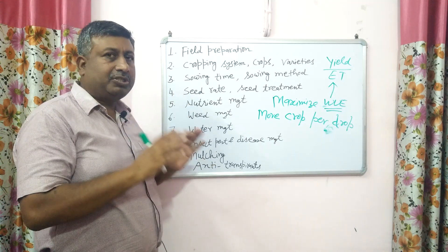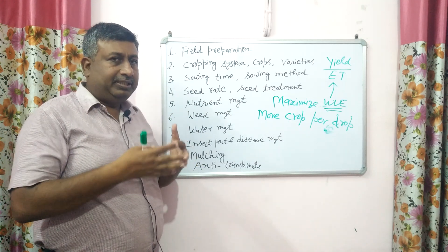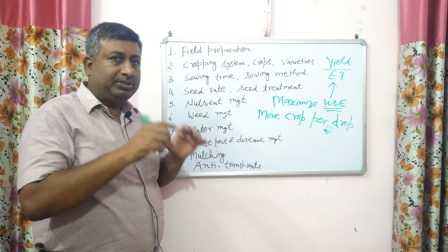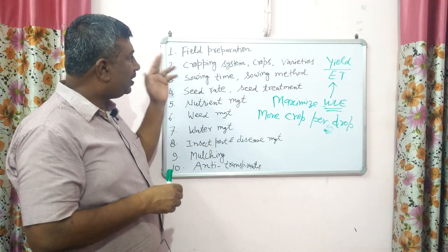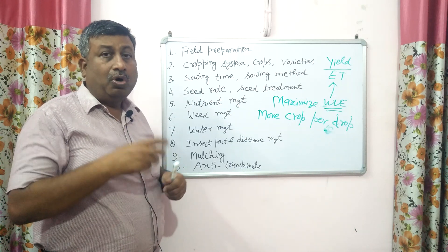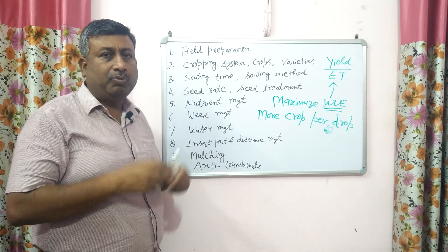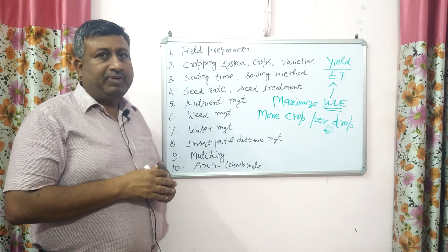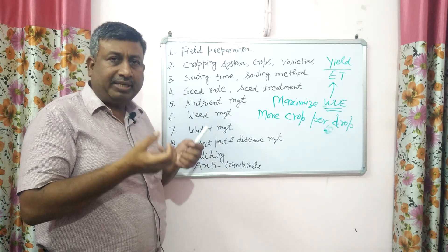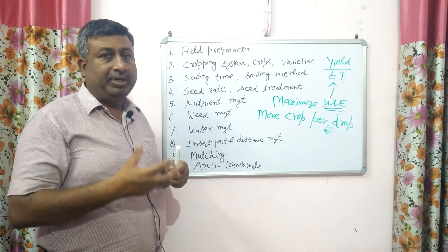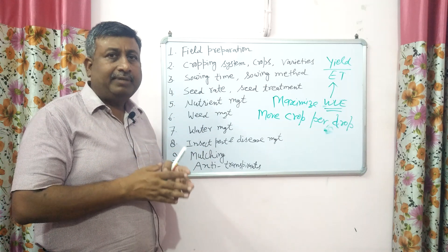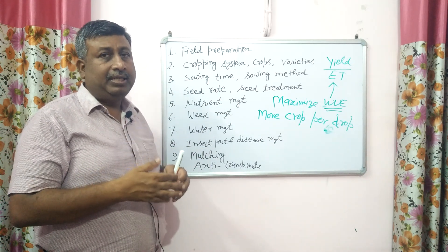Starting with the first operation: field preparation. Our activity is moisture conservation, utilization of moisture, and increasing yield level. We want to catch the rain, so deep plowing once in three years and off-season tillage are recommended so that the soil is exposed, there is more infiltration and more percolation of water. This tillage operation is very important to catch the initial rainwater. During the season, we want to harvest rainwater and check the runoff. That is why leveling and bunding at the time of field preparation are essential.